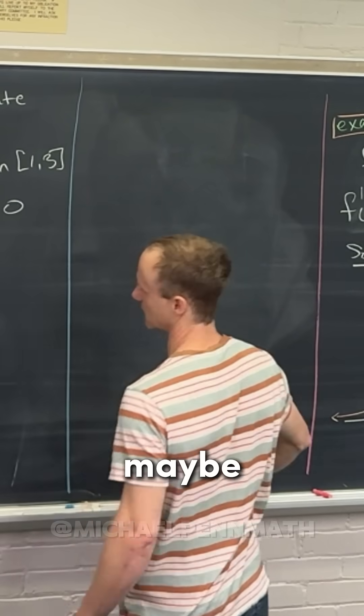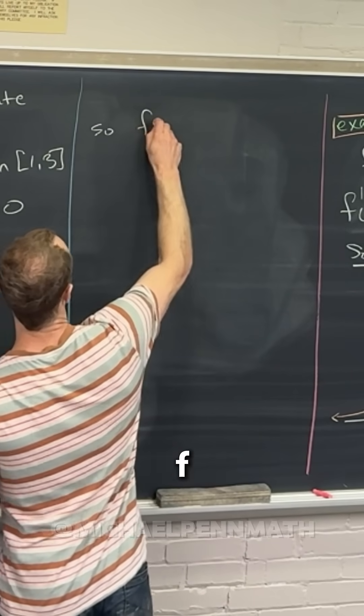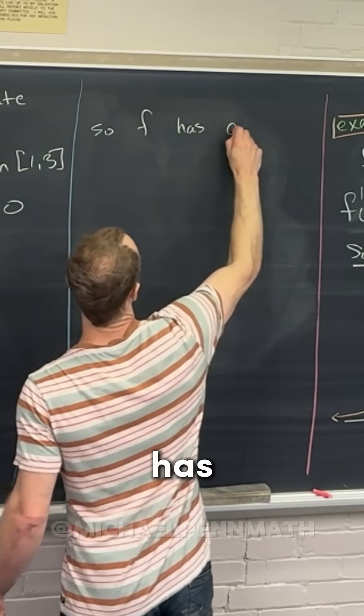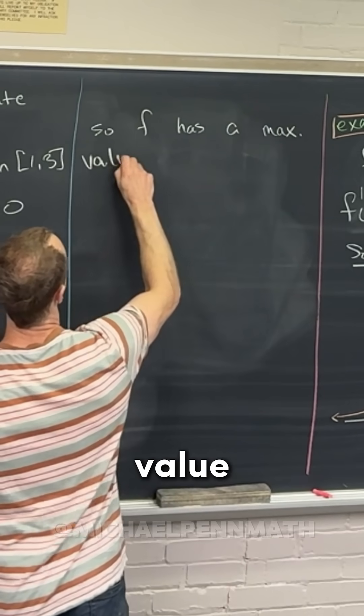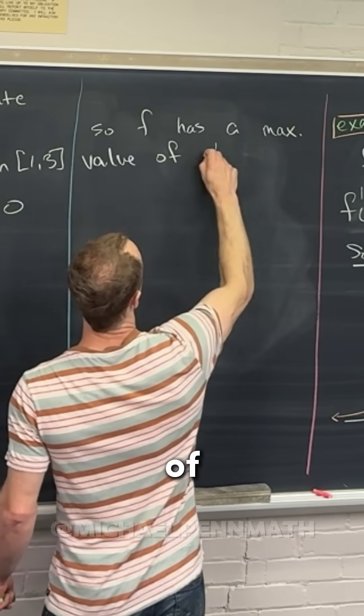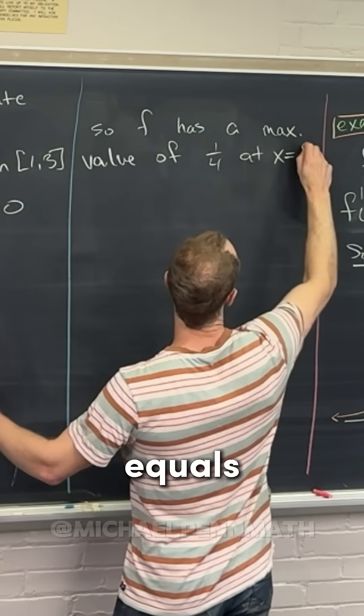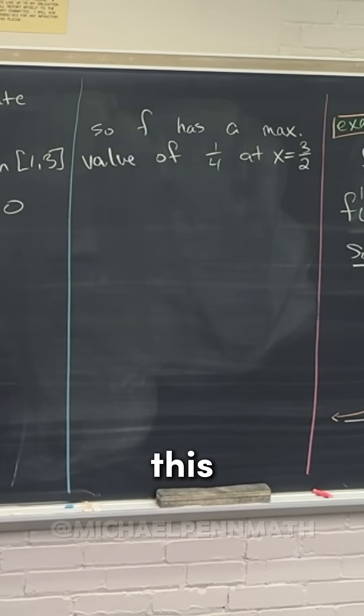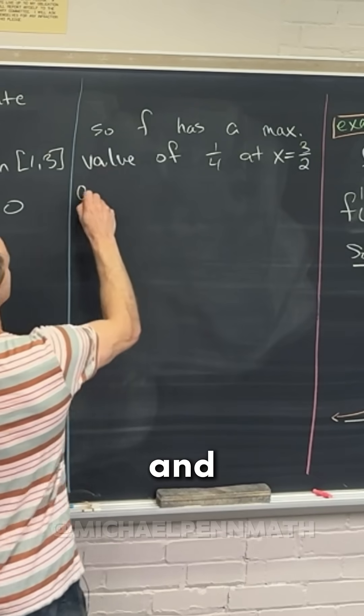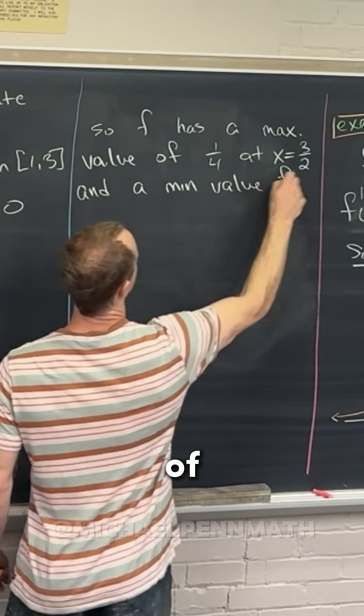Well, you could write a sentence, maybe, right? It would be something like this: So f has a maximum value of 1/4 at x equals 3/2. So that would be like describing this behavior, and a minimum value of negative 2 at x equals 3.